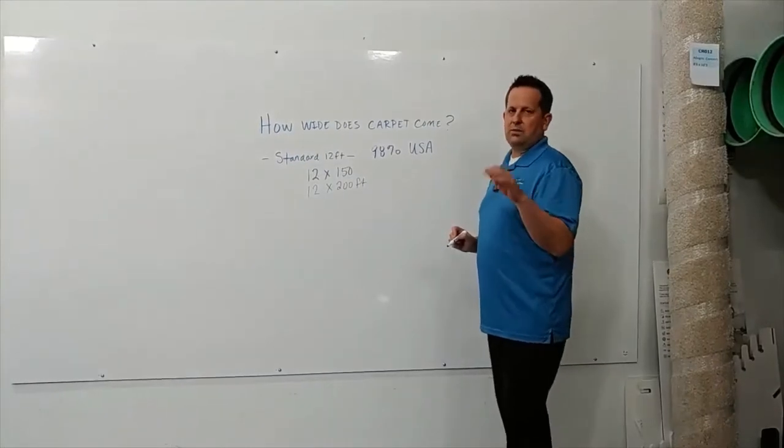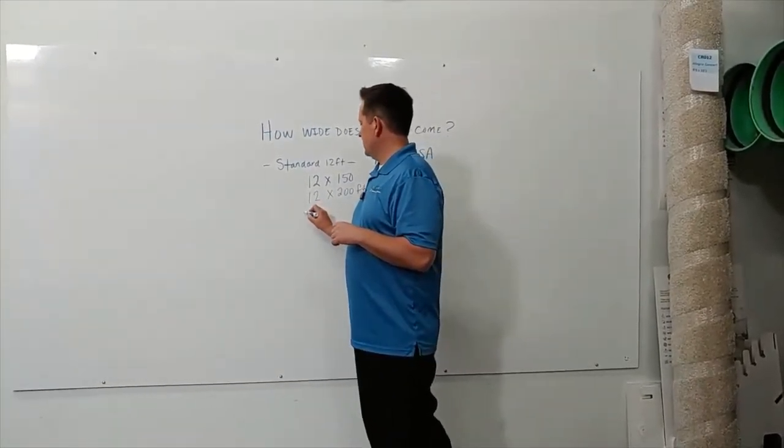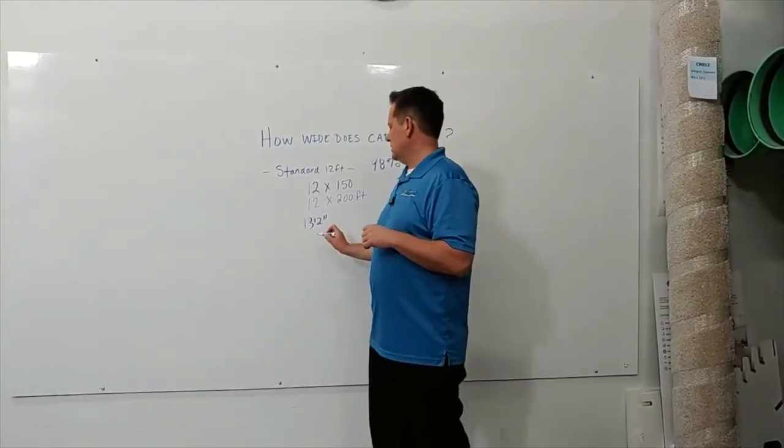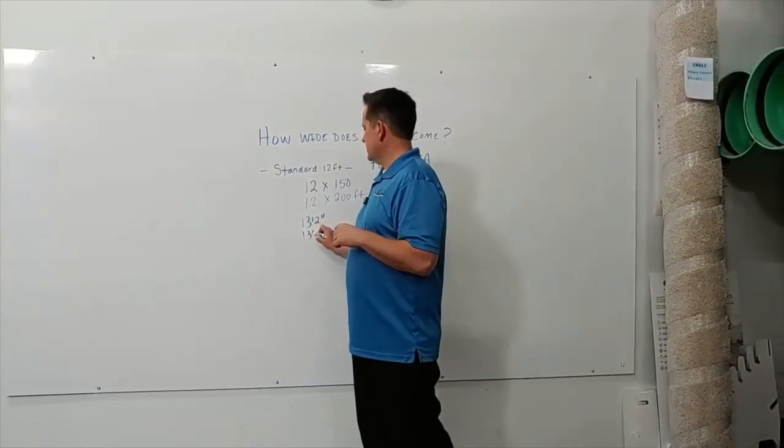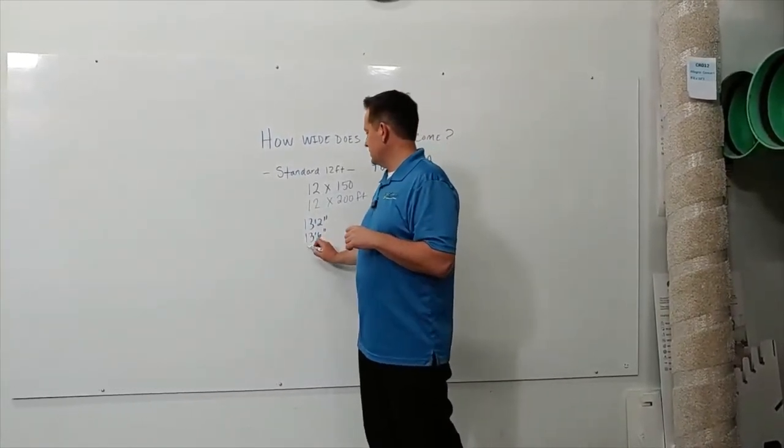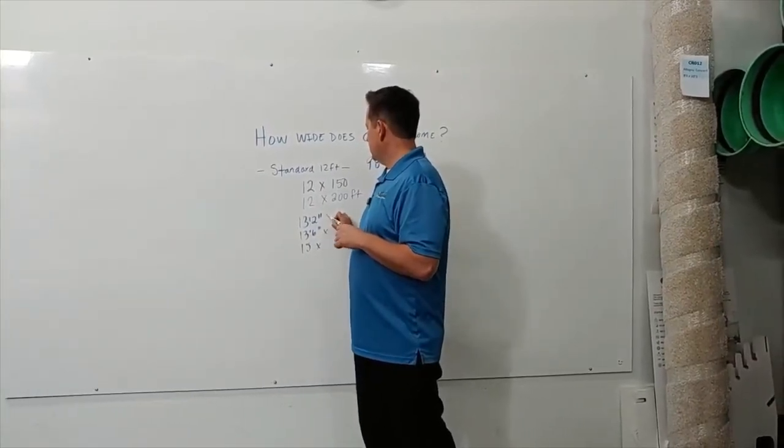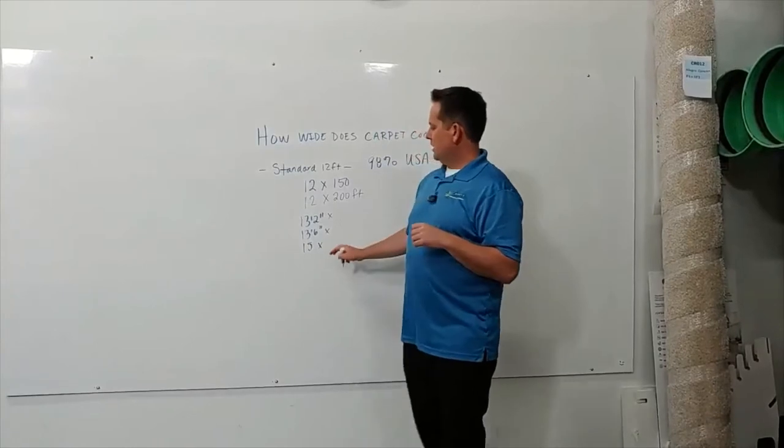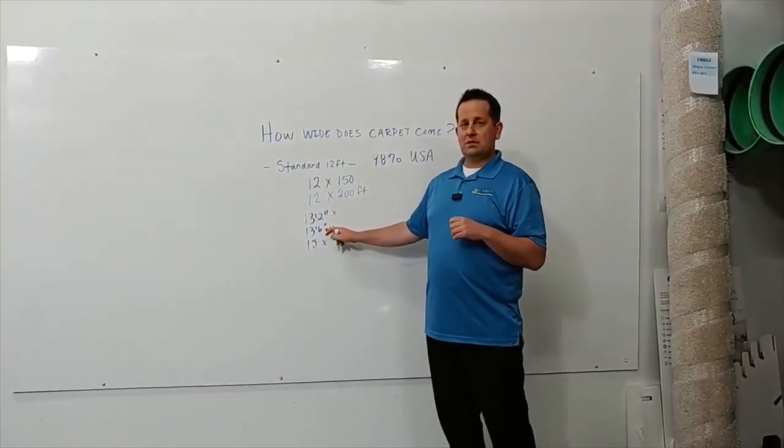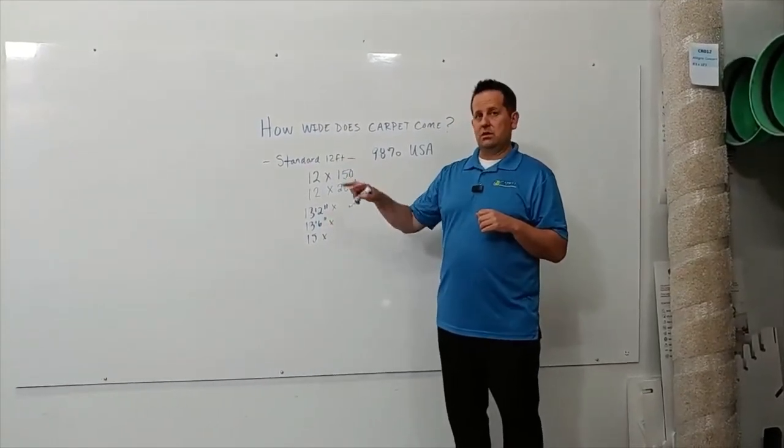Now carpet, sometimes you can get it in either 13 foot width, sometimes 13 foot 6 inches, and sometimes 15 foot by your length. Most of the styles that come in these widths are usually foreign and made in Turkey or other areas.